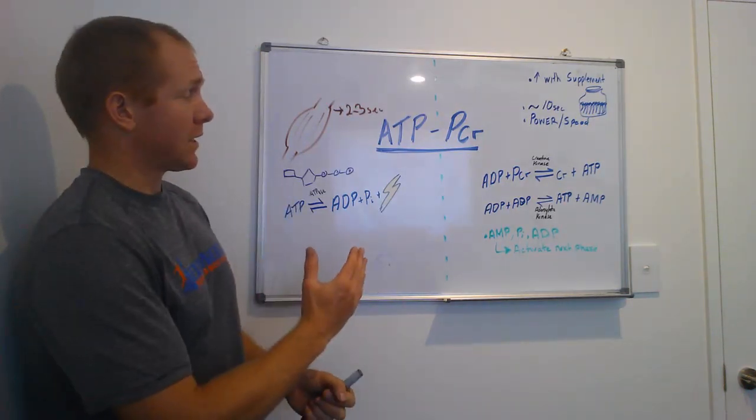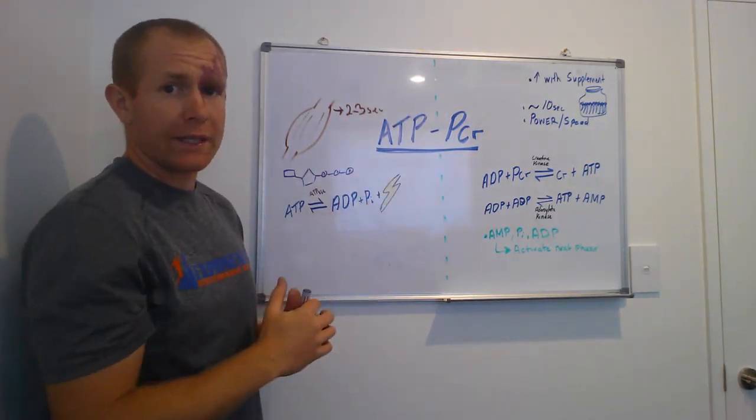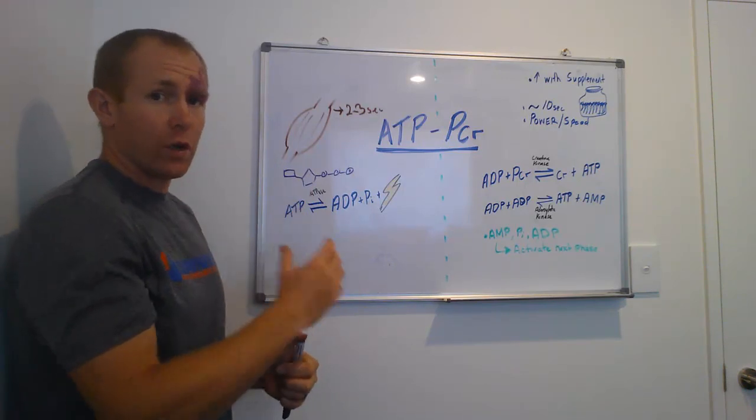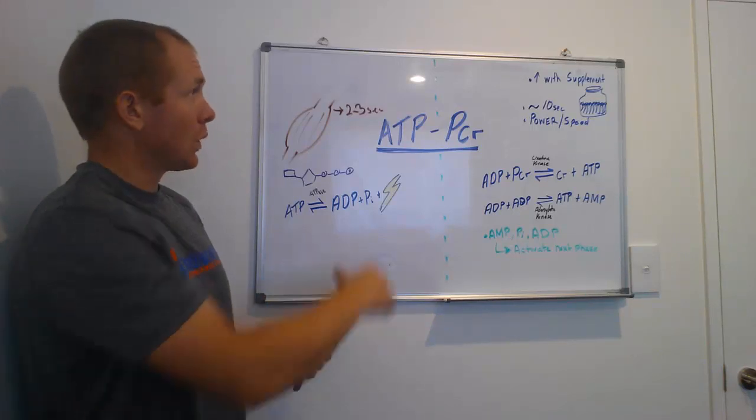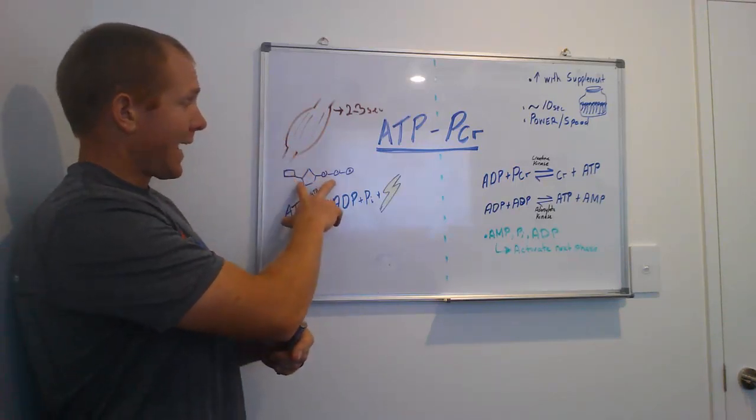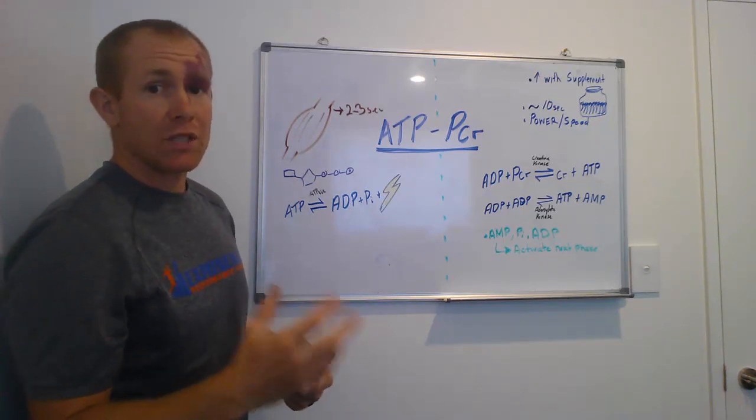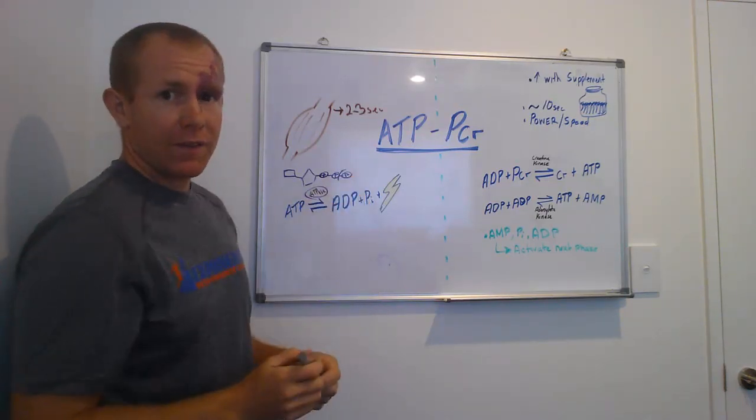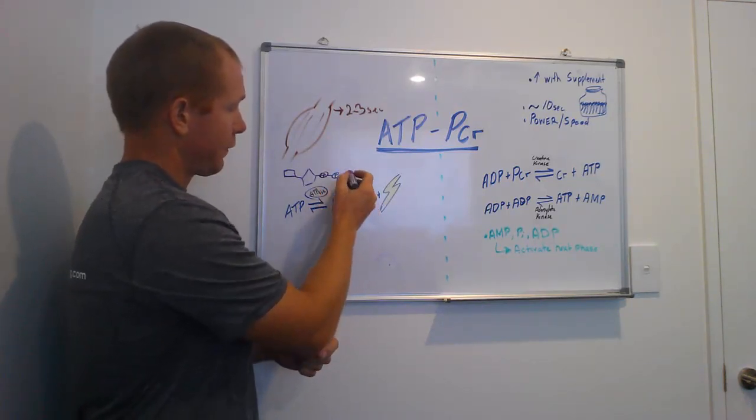So, ATP-PCR energy system. There's kind of two components of it, and that's why I've got this dashed line down the middle of the board here to try and hopefully get that concept over to you. First of all, we've got what's happening in the muscle, the ATP storage. If you remember back to our last video, there's a small amount of ATP stored in the muscle, about two to three seconds, depending on who you are and your training status. So, this ATP, if we remember this molecular makeup here, this ATP can be used instantly. So, what happens is ATPase cleaves off this end phosphate molecule.